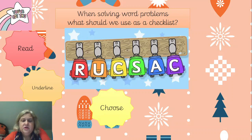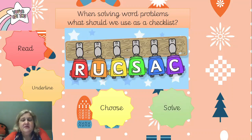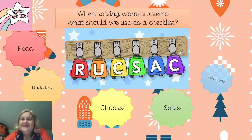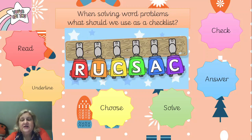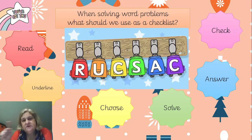Underline the key information in the question so it stands out for you. Then choose your calculation - decide whether you're multiplying or dividing. Then you're going to solve it using a number line. If you're doing the harder ones and you know it's multiplication, you could use a multiplication grid. Then you answer your question, putting that back into the number sentence. Finally, check that you've got it right.